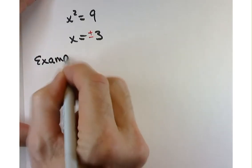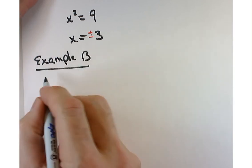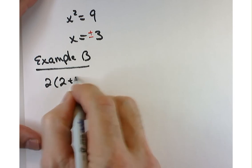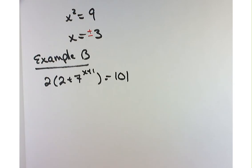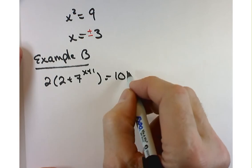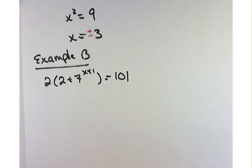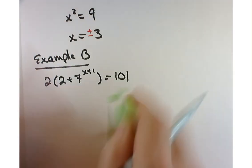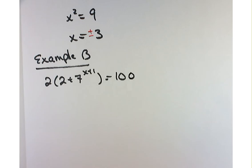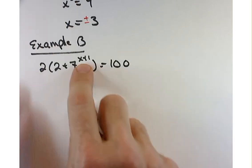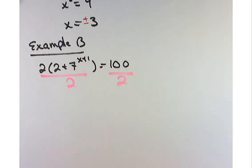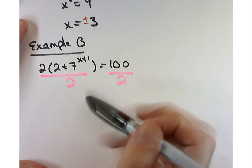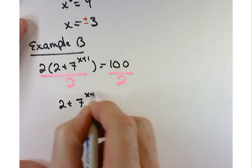Let's move on to example B. I like this one — it's not that hard, it just takes a little bit of unpacking. We're not going to get a nice even number. Let me make that 100 on the right-hand side. To start with, I want to get the x's by itself, so as a good start I'm going to divide both sides by 2. That leaves me with 2 plus 7 to the x plus 1 equals 50.